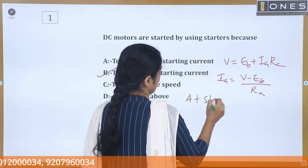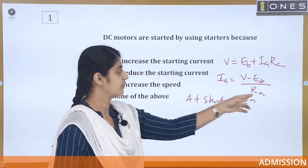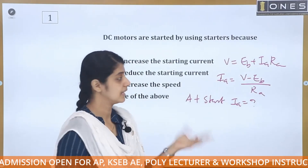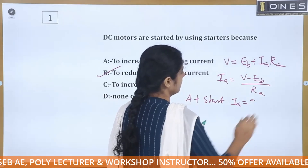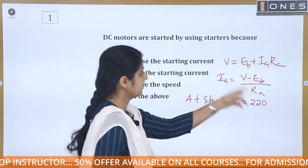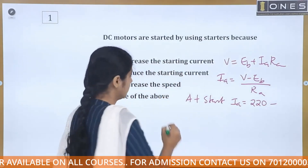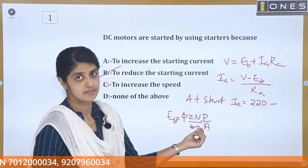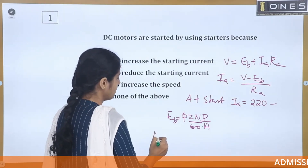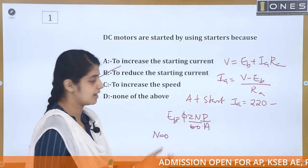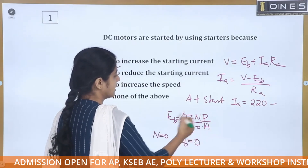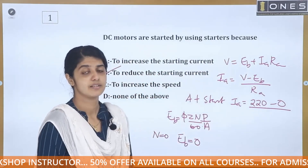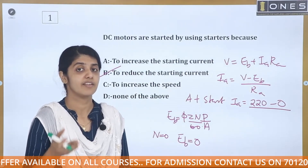At starting, speed N = 0, so the back EMF Eb = 0 (since Eb = φZNP/60A, and N = 0 makes this term zero). Substituting Eb = 0 into the current equation: Ia = V / Ra. With a 220V DC supply and Ra approximately 0.5 to 1 ohm, assuming Ra = 1 ohm, the starting current Ia = 220 / 1 = 220A.